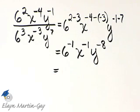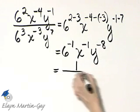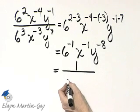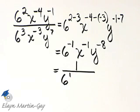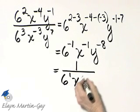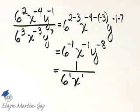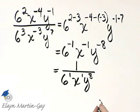All of these are negative exponents, so I will write this as 1 over. If it's 6 to the negative 1 in the numerator, it's 6 to the 1 in the denominator. If it's x to the negative 1 in the numerator, it's x to the power of 1 in the denominator. And if it's y to the negative 8 in the numerator, it's y to the 8th in the denominator.